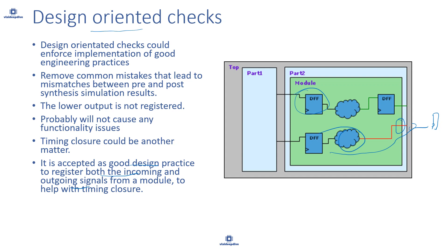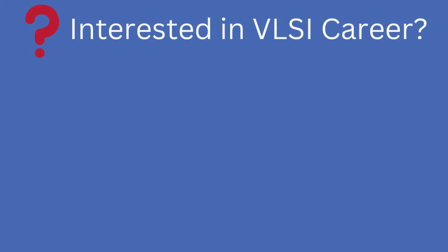So lint not only catches basic rules but also design-oriented checks. From a design standpoint, for best RTL design practices, we follow a certain set of rules and guidelines, and the method to enforce those guidelines is linting. Lint allows us to enforce guidelines and catch potential problems in the design very early in the flow, right when you are coding the RTL.